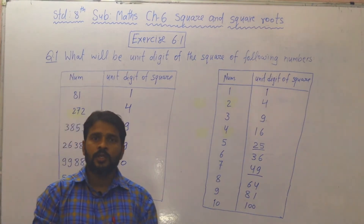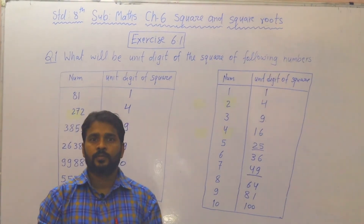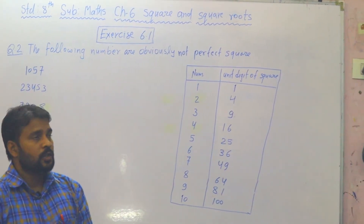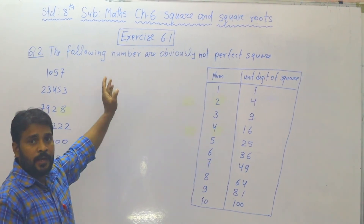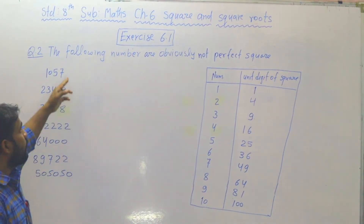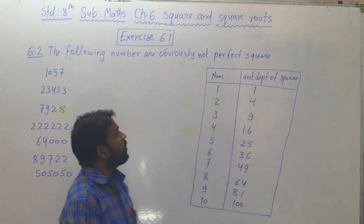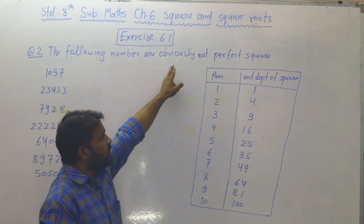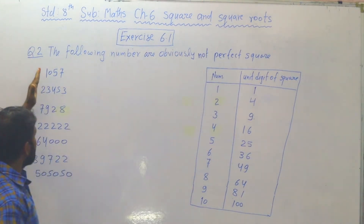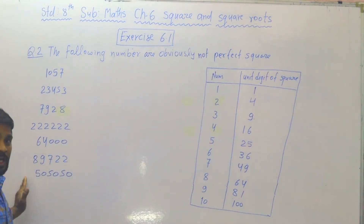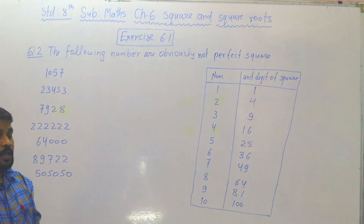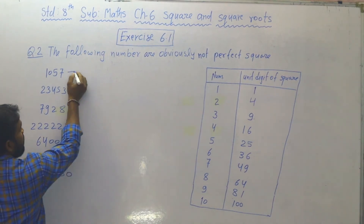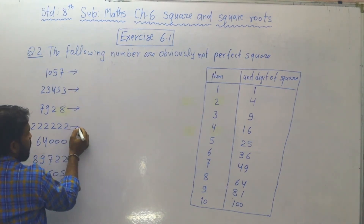तो दोस्तों अब हम दूसरा question देख लेते हैं. Now we will solve question 2 of exercise 6.1. Question है: The following numbers are obviously not perfect squares. कुछ numbers given हैं — ये numbers perfect square नहीं हैं, इसका reason आपको देना है.